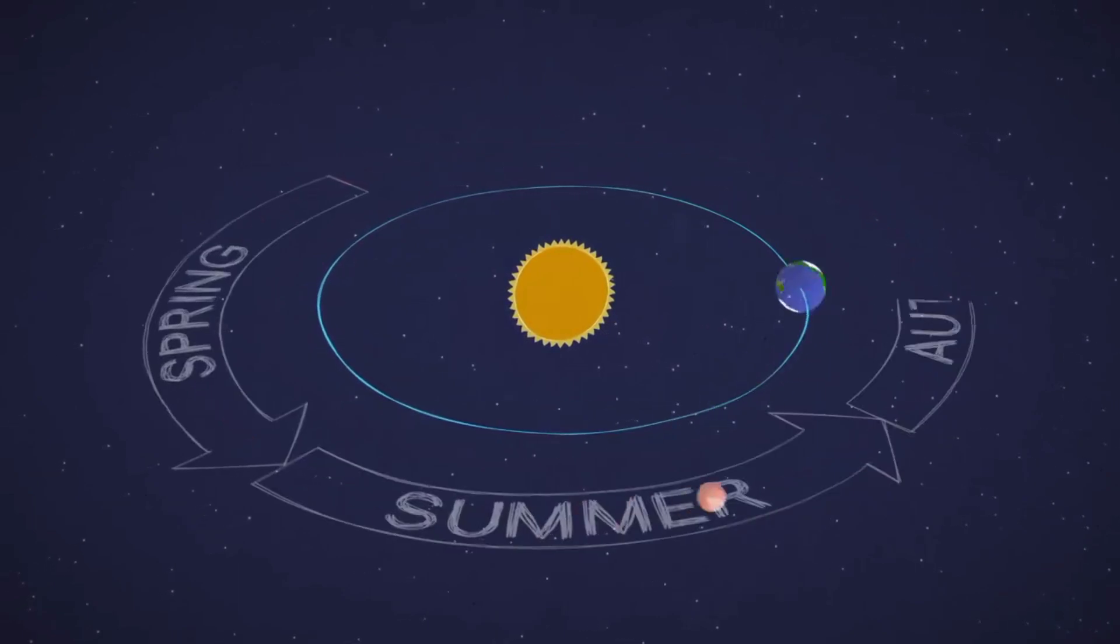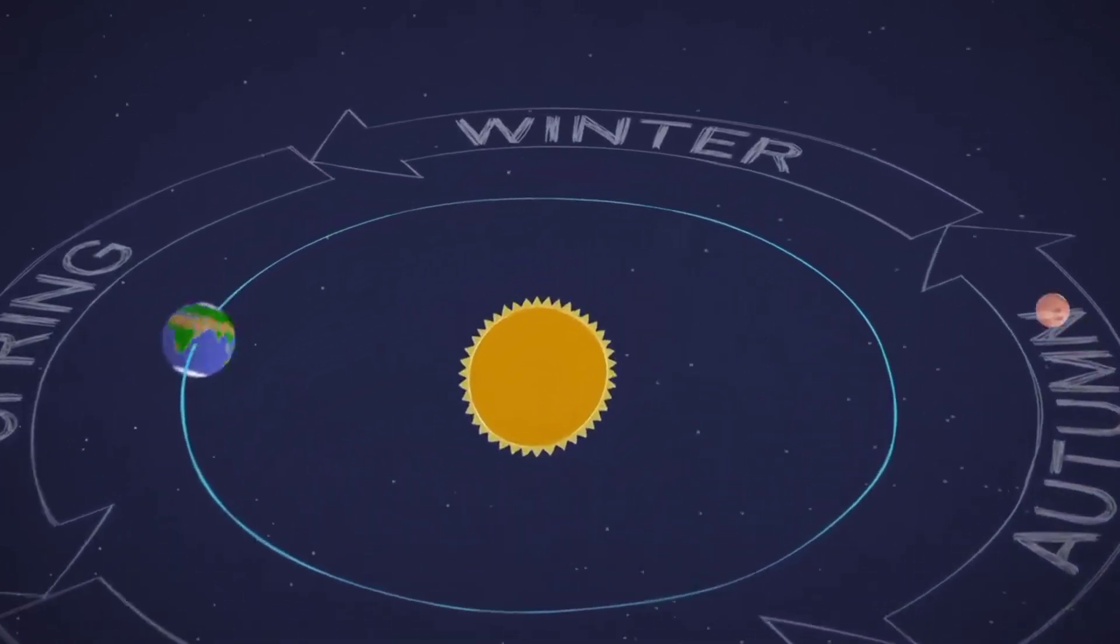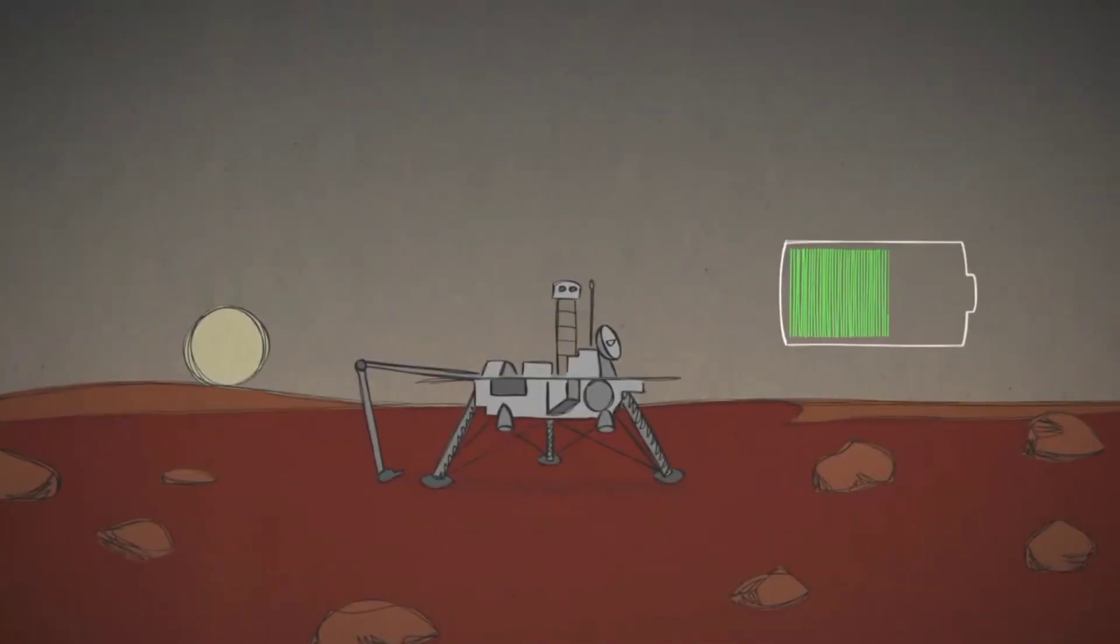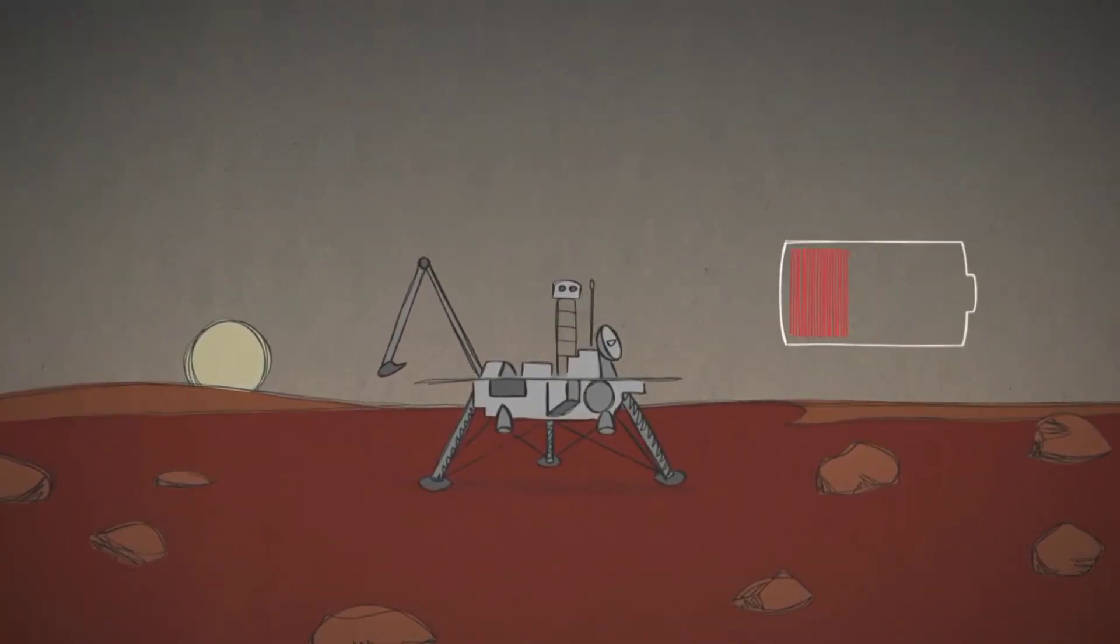That longer year means longer seasons too. Over extended Martian winters, the shorter days and reduced sunlight mean that solar-powered spacecraft sometimes have to carefully conserve their energy.